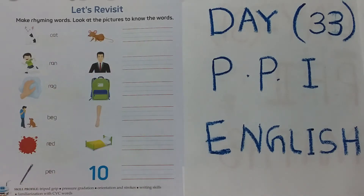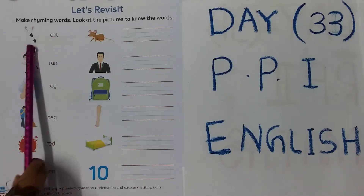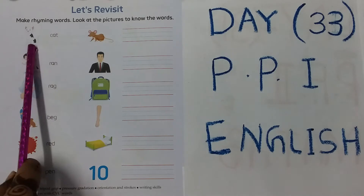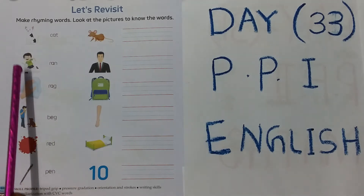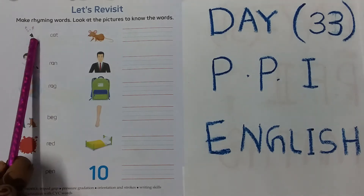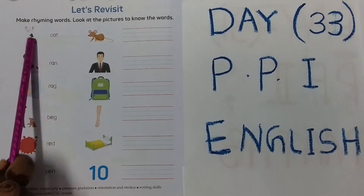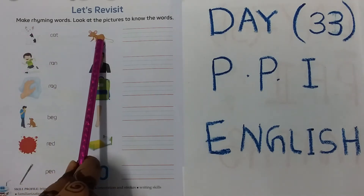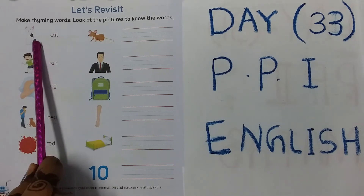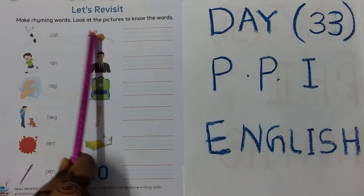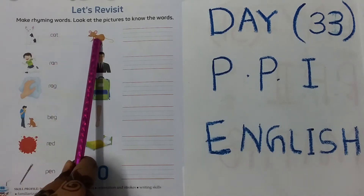Look at the first picture. This is a cat. Cat — Rat. Cat, Rat. This is called rhyming words.